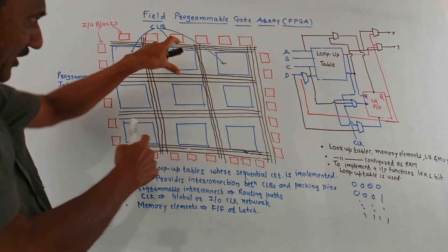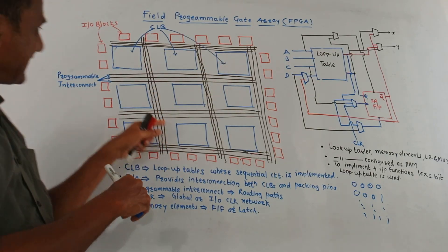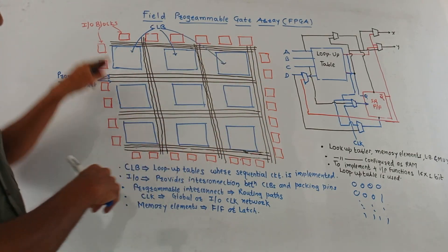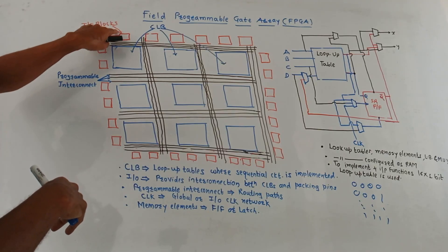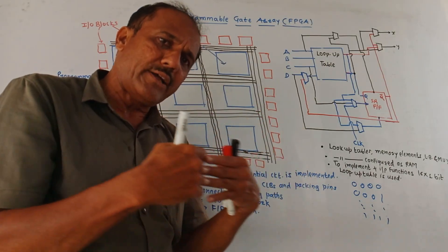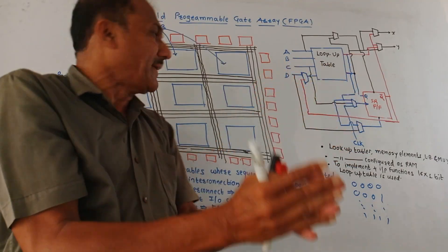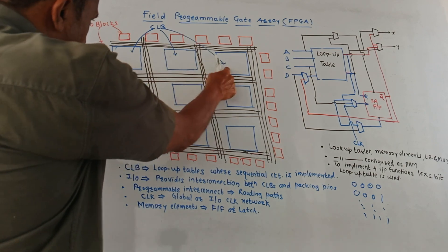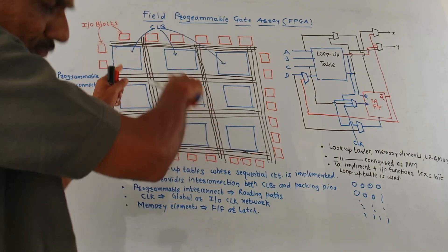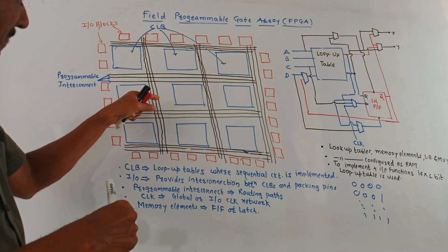This diagram shows the architecture details of FPGA. I have shown different blocks in this diagram. These small squares drawn everywhere around this structure represent Input-Output Blocks. As the name indicates, these Input-Output Blocks are used to provide interconnections from logical devices to the packaging pins. This is the major block where I have written CLB, that is Configuration Logic Blocks. Different Configuration Logic Blocks are used as shown in this diagram.